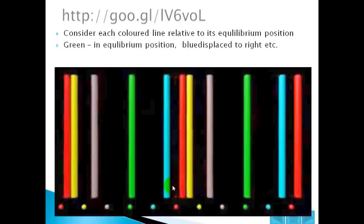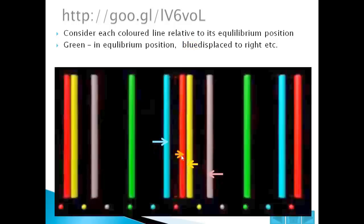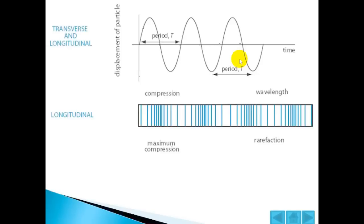The green is in the equilibrium position and the blue is displaced. Look how far the blue is displaced to the right. Look how far the red one is displaced to the right. The yellow one is displaced to the left, and the lilac one is displaced to the left. Notice that where we have a line which is the high-density compression, the particles are moved towards this point. And when we have a rarefaction, they're moved away from it. If we look at this point of compression, we know that the particles to the left are pushed to the right, and here the particles on the right are pushed to the left.